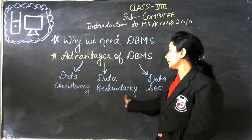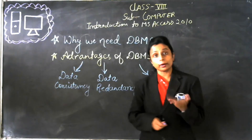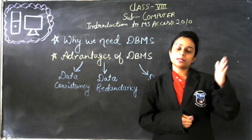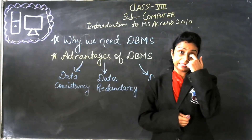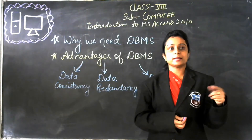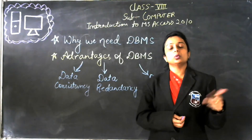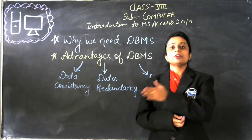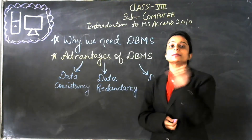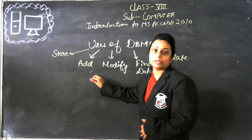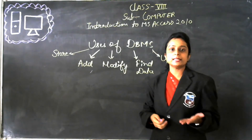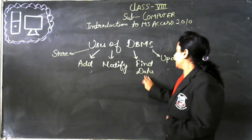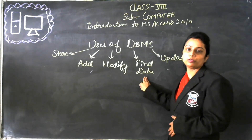The next advantage is data redundancy or data duplication. If we take the example of a class, if there are 2 or 3 students who are having the same names, we can differentiate their names with the contact number or we can put some constraint or condition. So we can easily differentiate students with the same name. This is called redundancy — we can remove redundancy or duplication in our data.